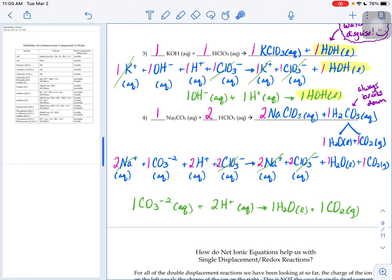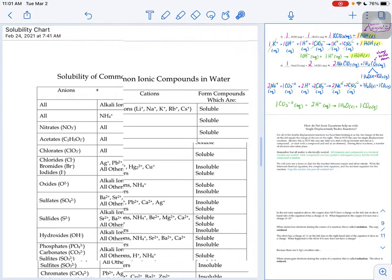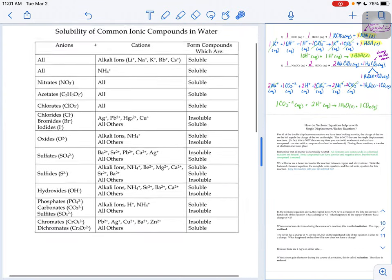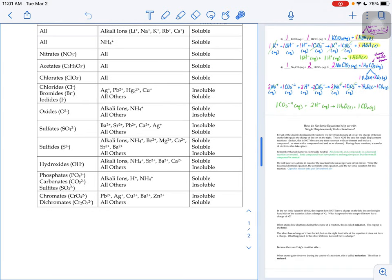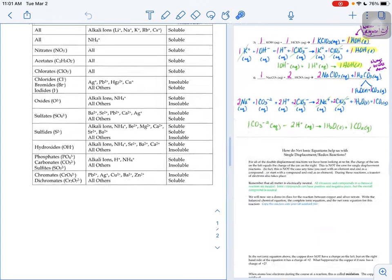Then our other product, hydrogen with carbonate. When we look over here and say, let's put hydrogen and carbonate together, here's carbonate with hydrogen, soluble. Soluble means dissolves in water, aqueous, right?